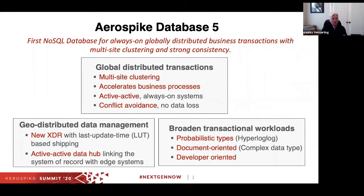We've been working on this model of strong consistency, and now we have it geographically distributed. Geographically distributed, strongly consistent transactions have been sort of a holy grail in databases. Google did work in the past few years to get there in the relational database space. We've completed this work in the NoSQL, more distributed, clustered model. What do you think this really means, Don, and can you put the work Srini and his team have done into perspective?